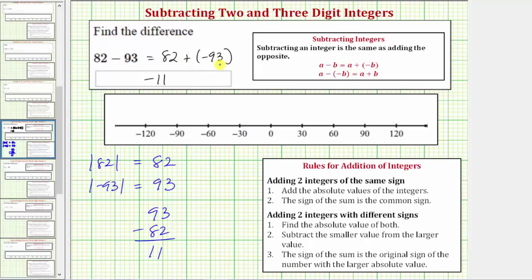Let's also show this sum on the number line. We'll begin by modeling 82 on the number line. So we start at zero and move right 82 units to 82.